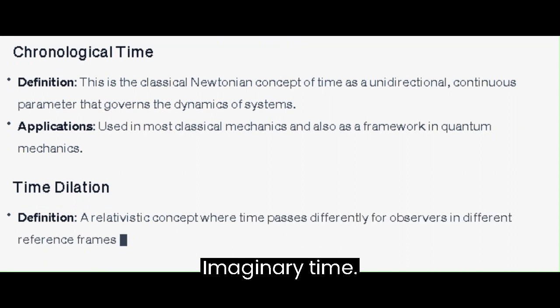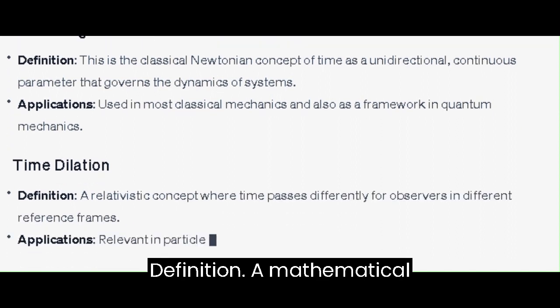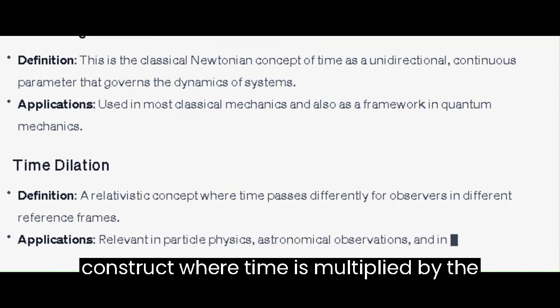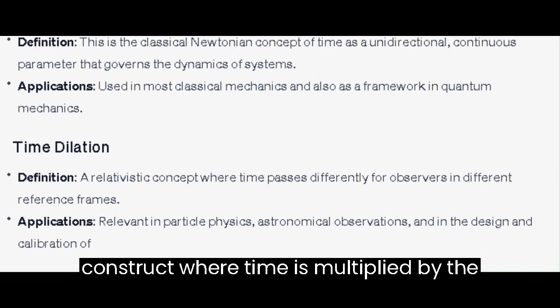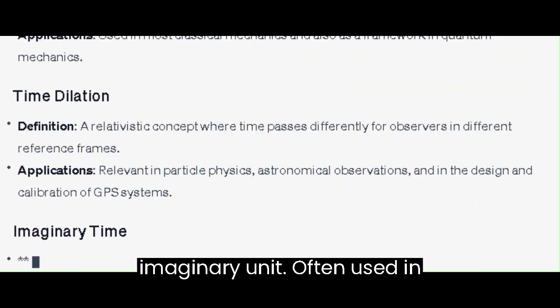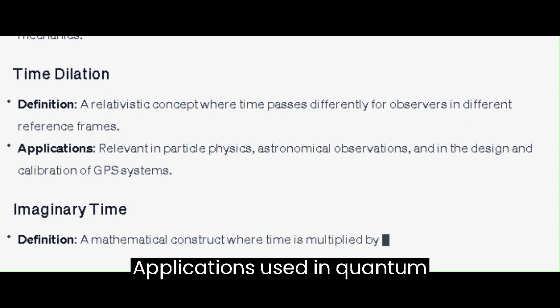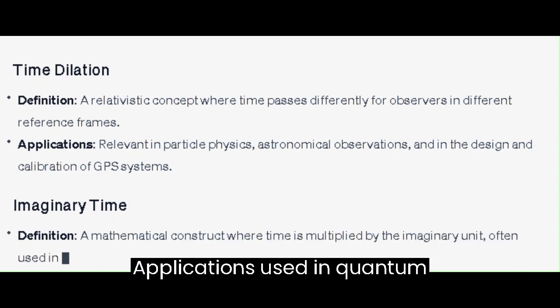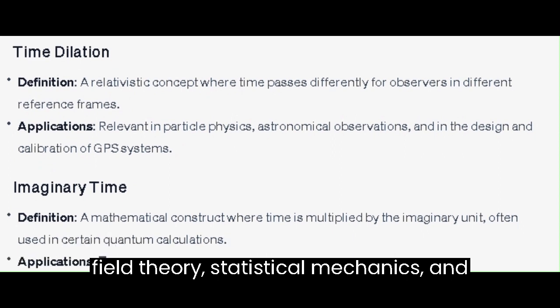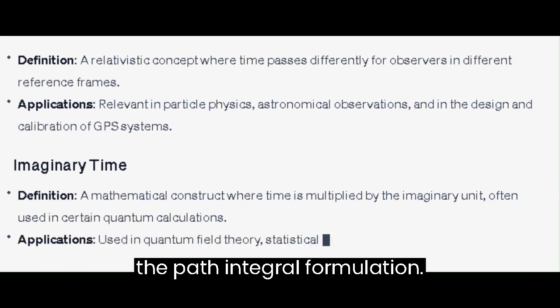Imaginary Time - a mathematical construct where time is multiplied by the imaginary unit, often used in certain quantum calculations. Applications: used in quantum field theory, statistical mechanics, and the path integral formulation.